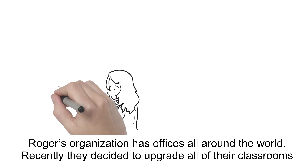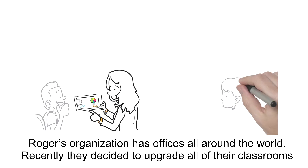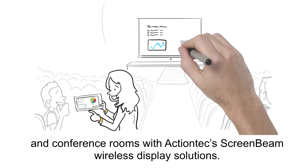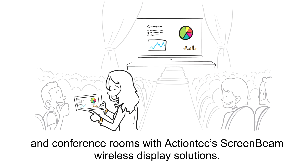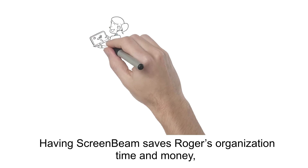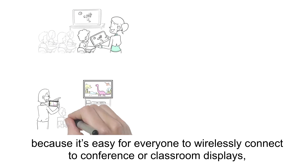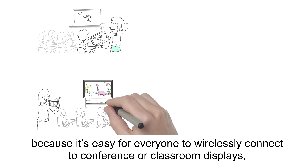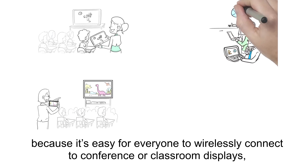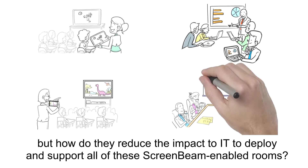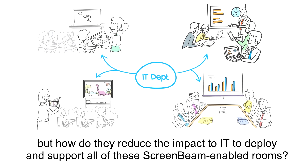Roger's organization has offices all around the world. Recently they decided to upgrade all of their classrooms and conference rooms with ActionTech's ScreenBeam wireless display solutions. Having ScreenBeam saves Roger's organization time and money because it's easy for everyone to wirelessly connect to conference or classroom displays. But how do they reduce the impact to IT to deploy and support all of these ScreenBeam enabled rooms?